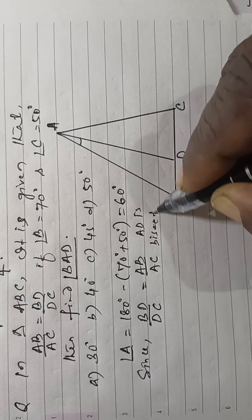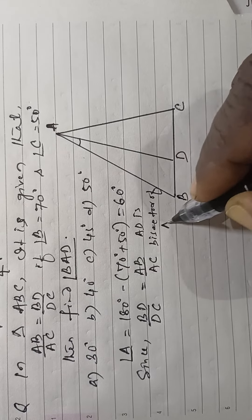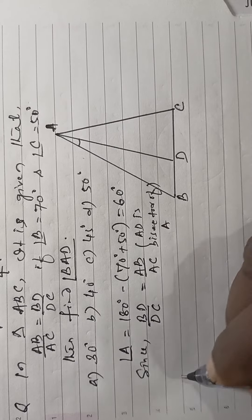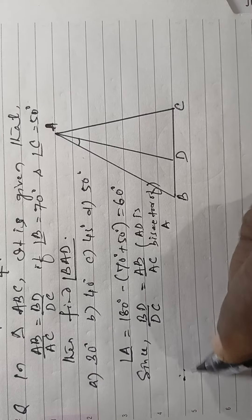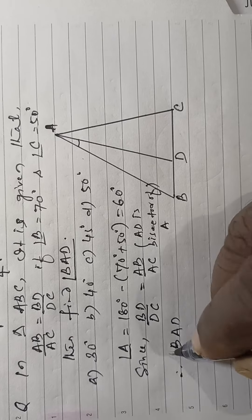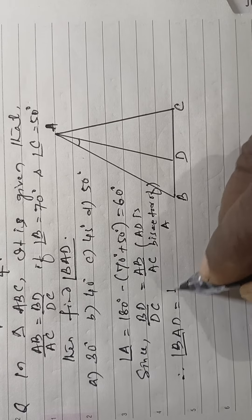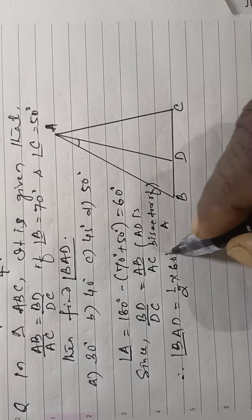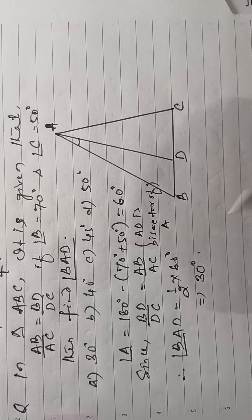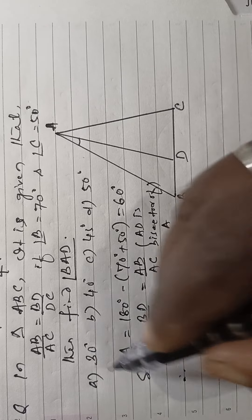Therefore, angle BAD is equal to half of 60 degrees, that is 30 degrees. The answer is option A.